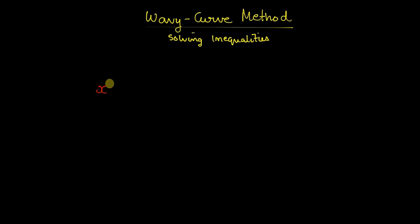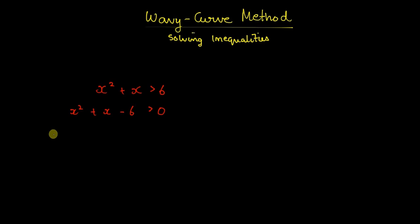Let us see a first inequality. Suppose you are given x squared plus x is greater than 6. The first thing we are going to do is factorize it. We shift the term to get x squared plus x minus 6 greater than 0, which becomes x squared plus 3x minus 2x minus 6 greater than 0, since 3 times minus 2 gives minus 6 and 3 minus 2 gives 1 as the coefficient.